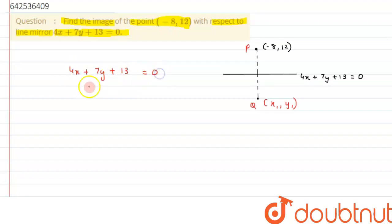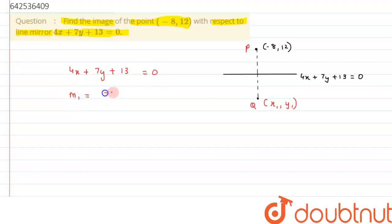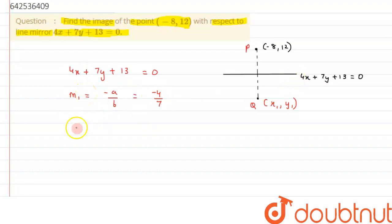Alright, so from here we can say this is the equation of a line. From here we can say the slope of this line, let's suppose it to be M1, and slope is minus A by B. Here A is nothing but the coefficient of X, that is minus 4 by 7. So this is the slope value we have calculated for the mirror.